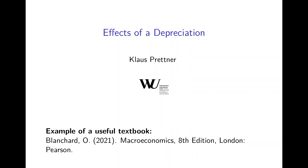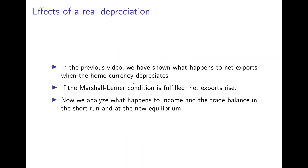Now we analyze the effects of a depreciation on the goods market of an open economy. In the previous video we looked at the effects of a depreciation of the home currency on net exports, and we saw that it depends — it's not a priori clear what happens — because we have quantity effects on exports and imports and price effects on the relative price of foreign goods. If the Marshall-Lerner condition is fulfilled, this means the quantity effects dominate the price effect, and in this case net exports will rise due to the decrease in the value of the home currency.